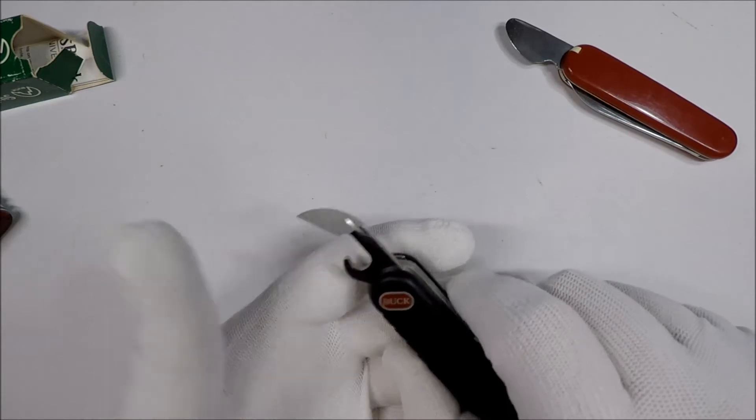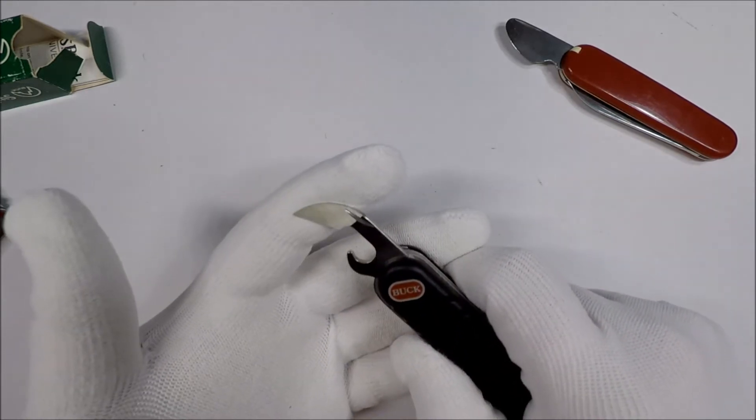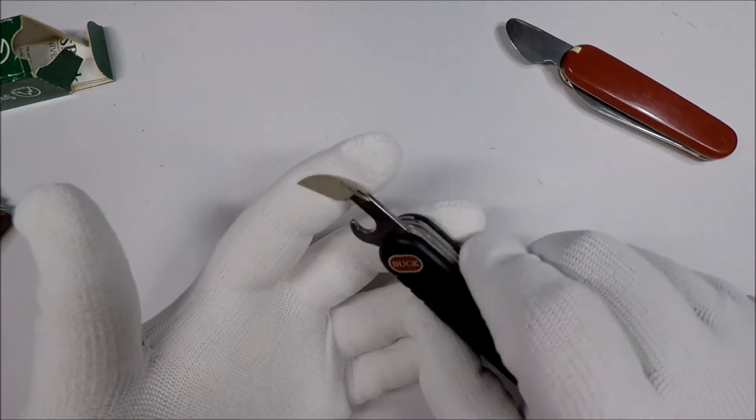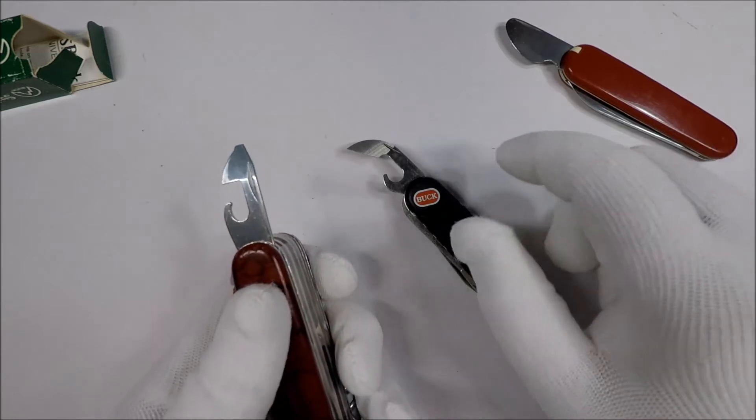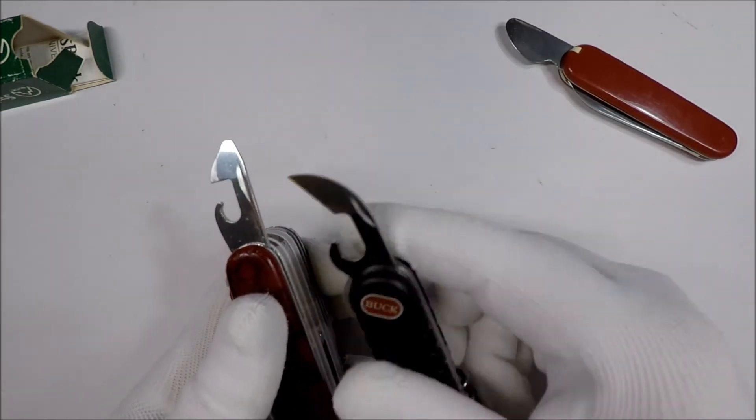Now this one has the aggressive and slightly evil-looking Winger can opener, versus the Victorinox can opener, which is the nicer, fancier version, as opposed to the super-angry version.